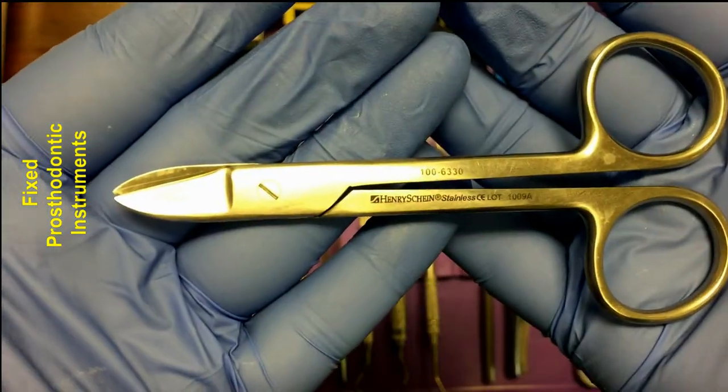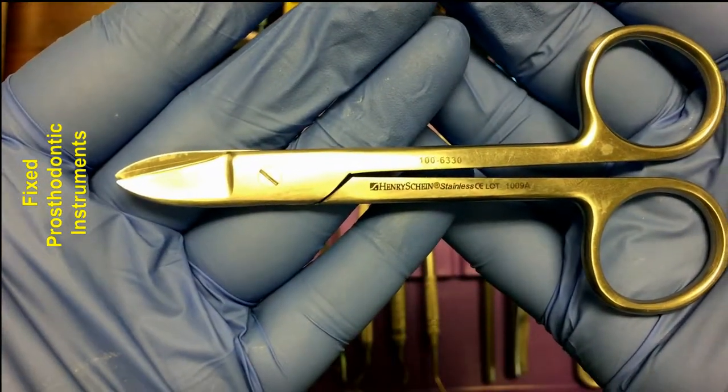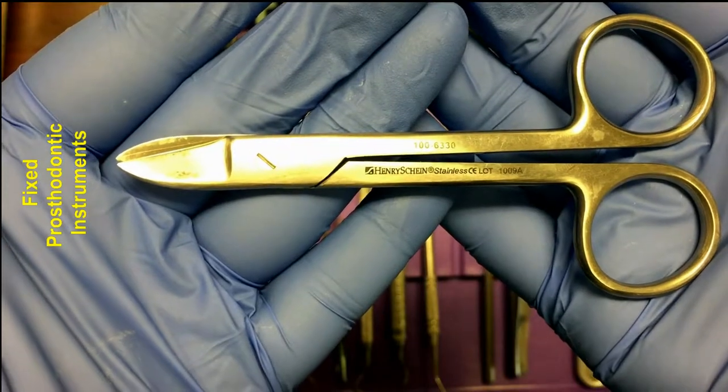The contouring pliers can be used to shape, crimp, or contour the temporary restoration.